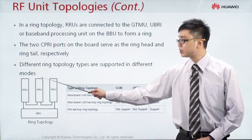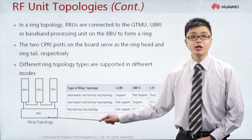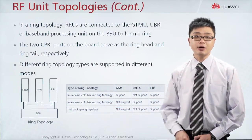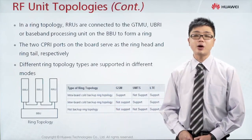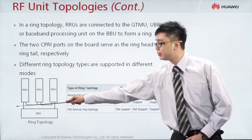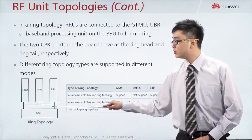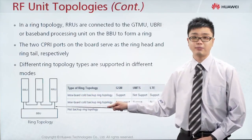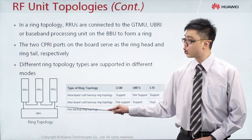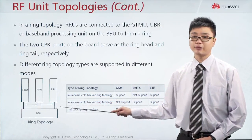We can also have a ring topology, in which the RRU is connected in a circle and then back to the same BBP board. This type of connection serves as an auto-backup function — if one connection is disconnected, you still have another one for backup. However, not many operators use this type of connection.